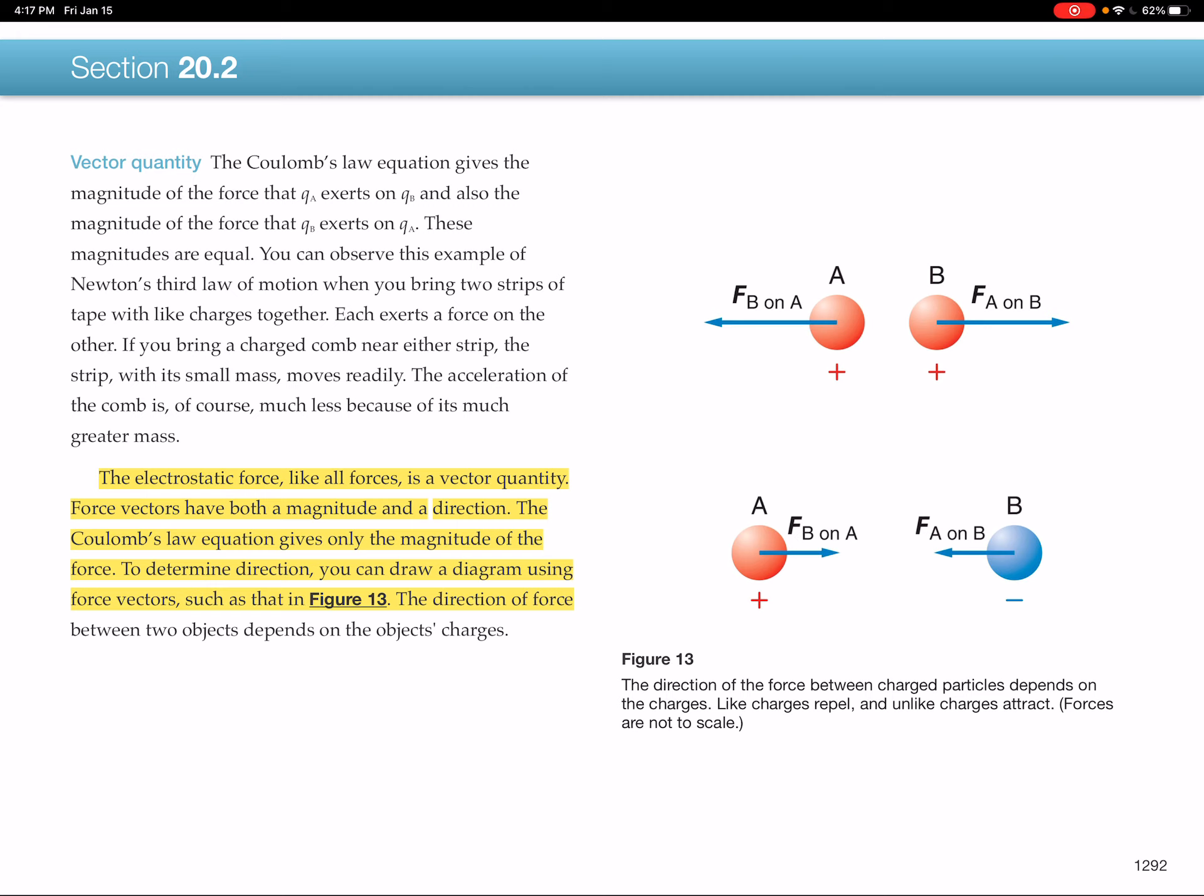The other thing to recognize is that electrostatic forces, like all other forces, are a vector quantity. The vectors have both magnitude and direction. Use Coulomb's law equation to get the magnitude of the force. Don't worry about whether the charges are positive or negative. Just use them to find the amount of the force. And then draw a diagram, draw a picture to see the charges and see what the direction of the force is going to be.